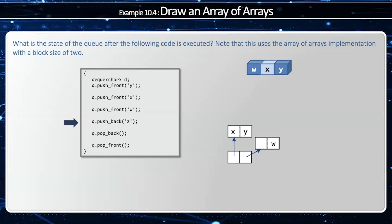Now, when I push back z, well, there's no space after y, because that block is full. So now I once again need to reallocate the deque. So now I'm going to have four pointers here, okay? And I'm going to unwrap it first.